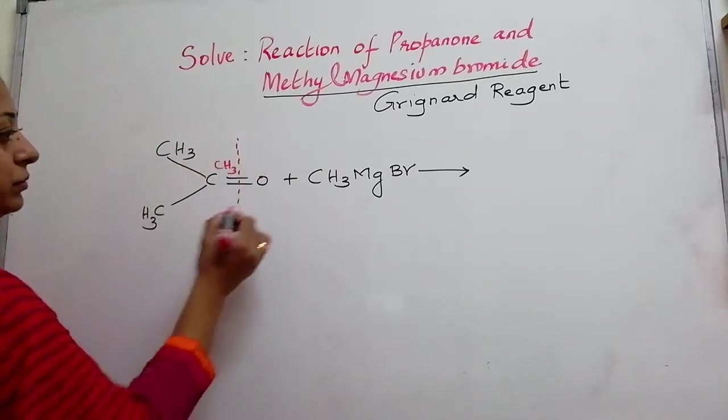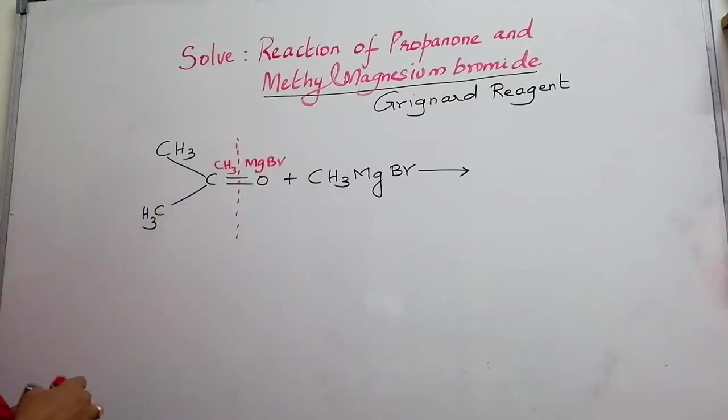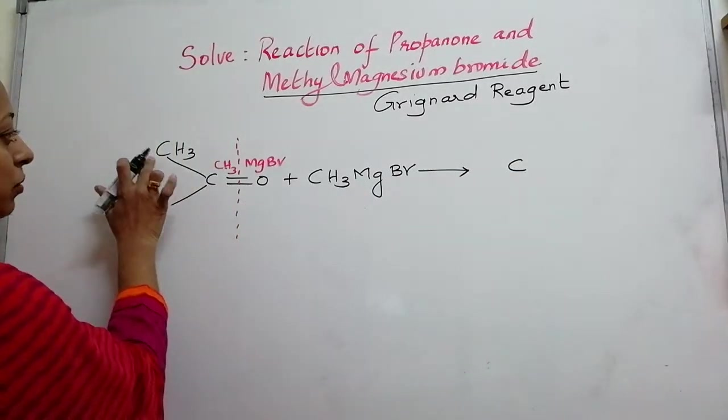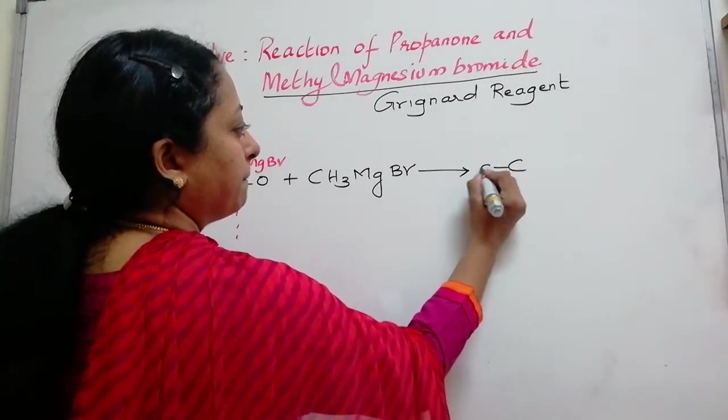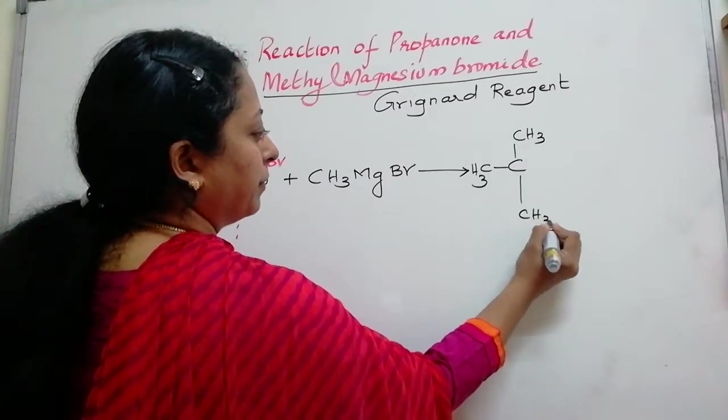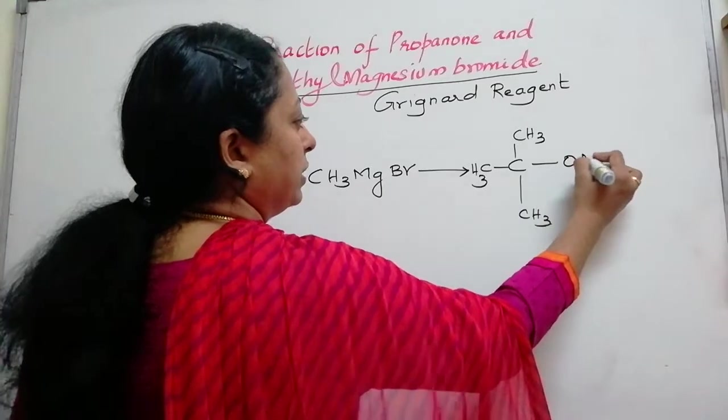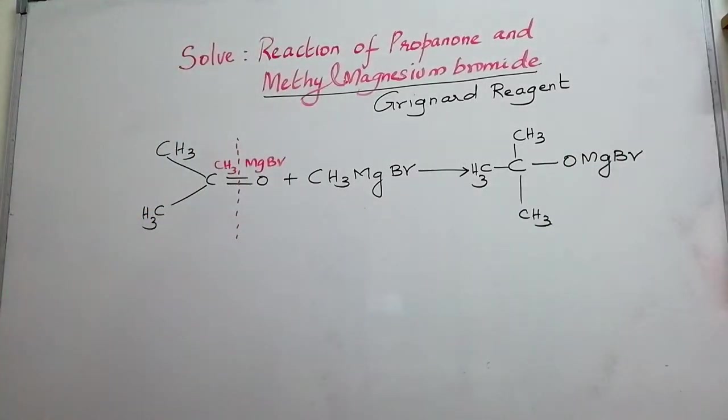Now we need to write the correct structure that is this carbon is holding 1, 2, 3 methyl groups. Then followed by there is an oxygen on the other end with MgBr. So, this will be your intermediate still.